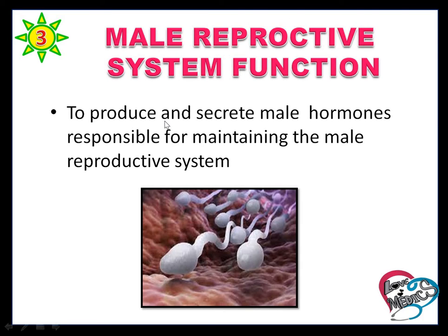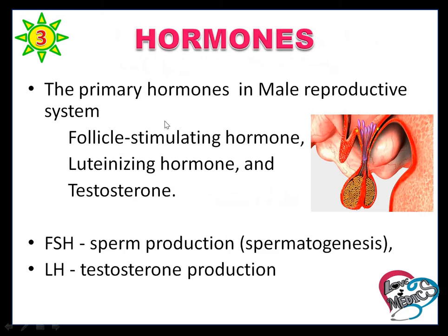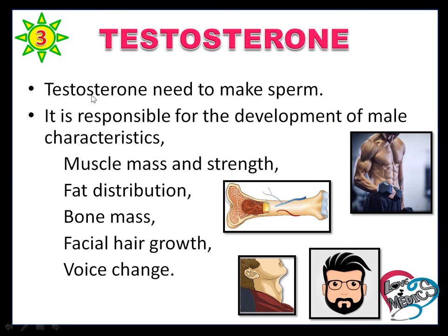During reproduction, the flow of urine is blocked from the urethra. It also produces male hormones. The primary hormones of the male reproductive system are follicle-stimulating hormone (FSH), luteinizing hormone (LH), and testosterone. FSH regulates sperm production, LH regulates testosterone production, and testosterone is responsible for sperm production.